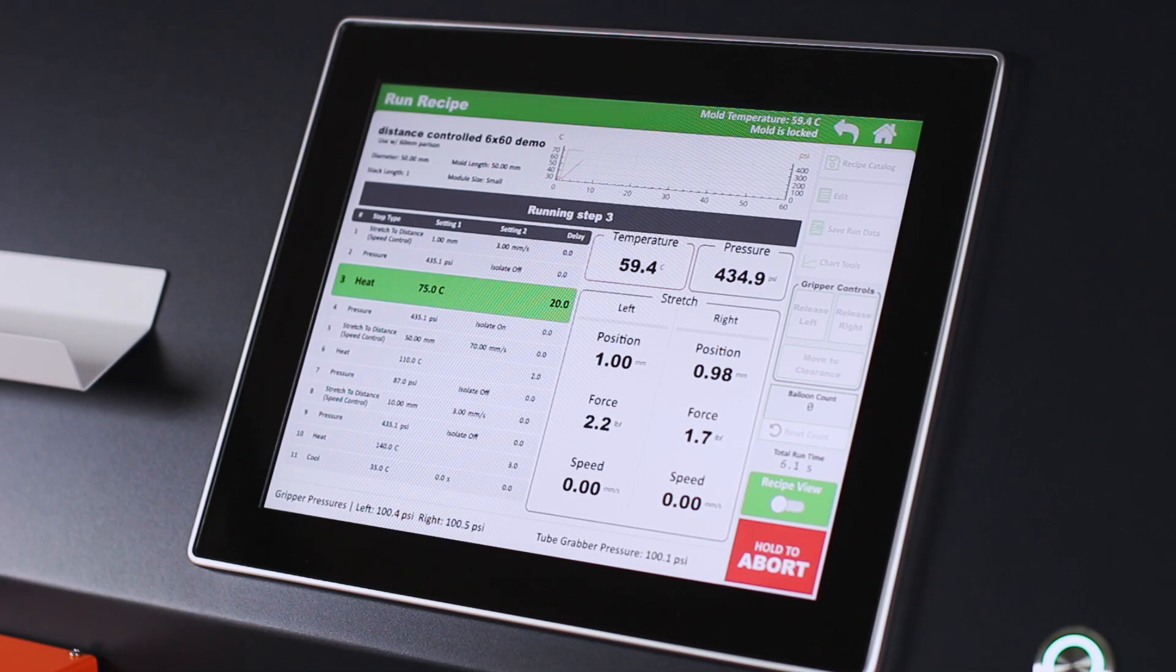During the cycle, all process data is output on the run screen, including mold temperature and balloon pressure, as well as left and right gripper position and force.